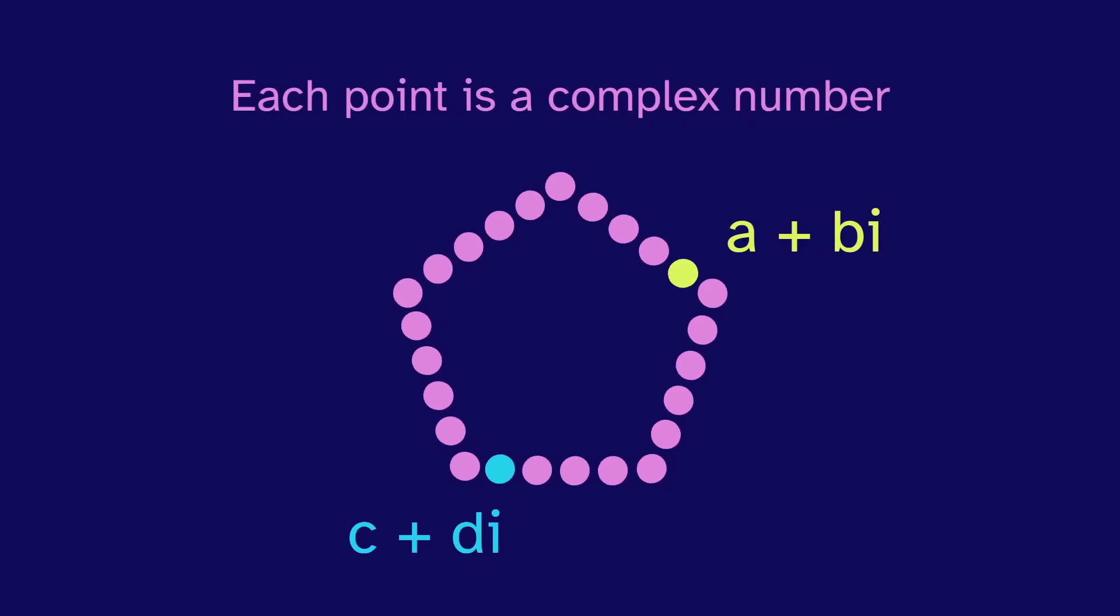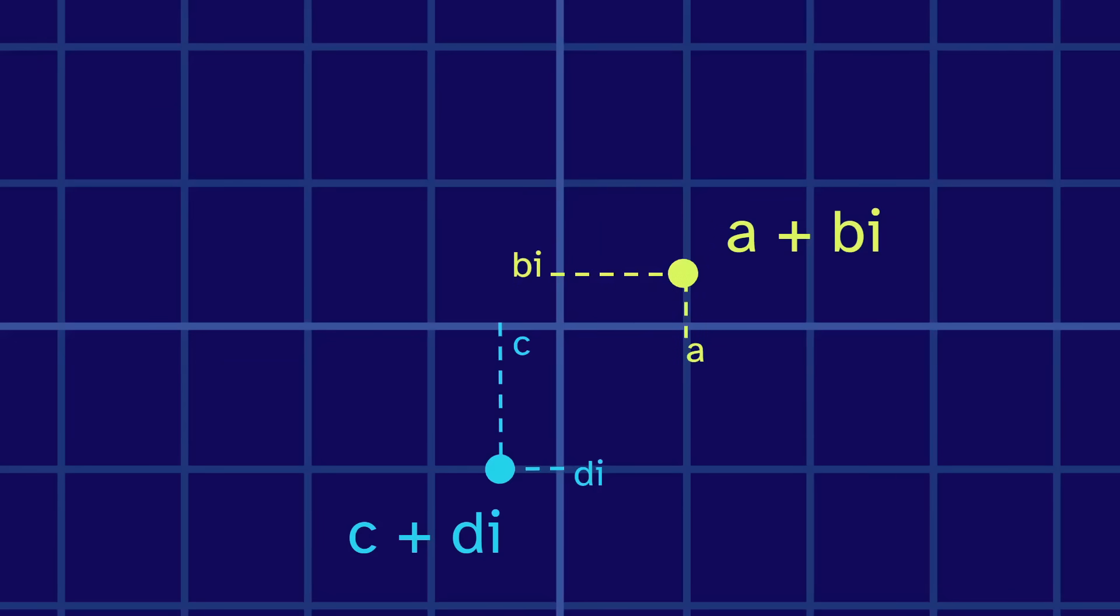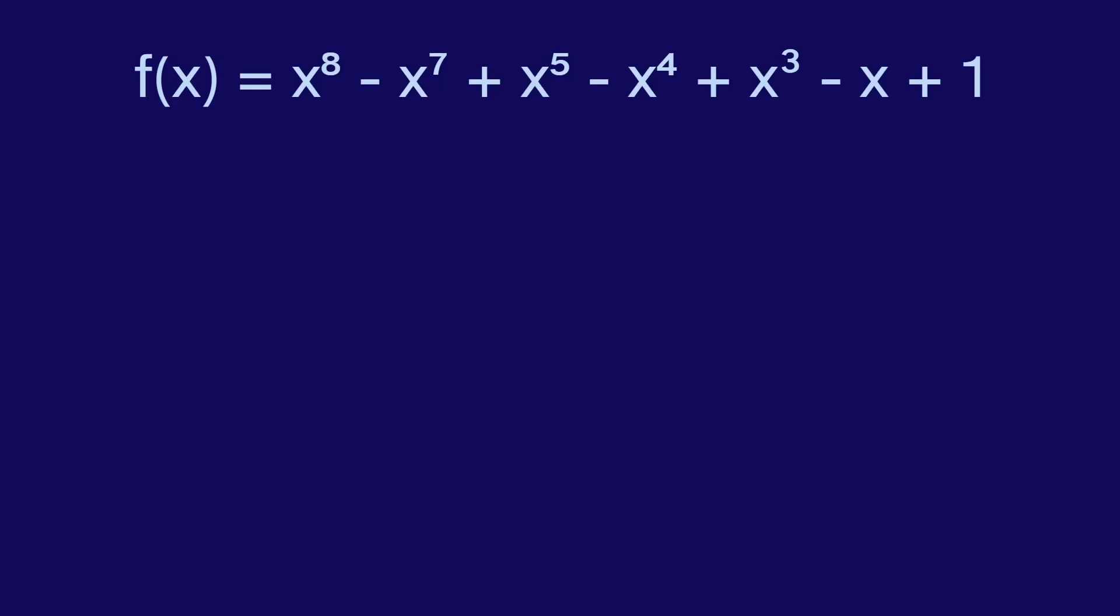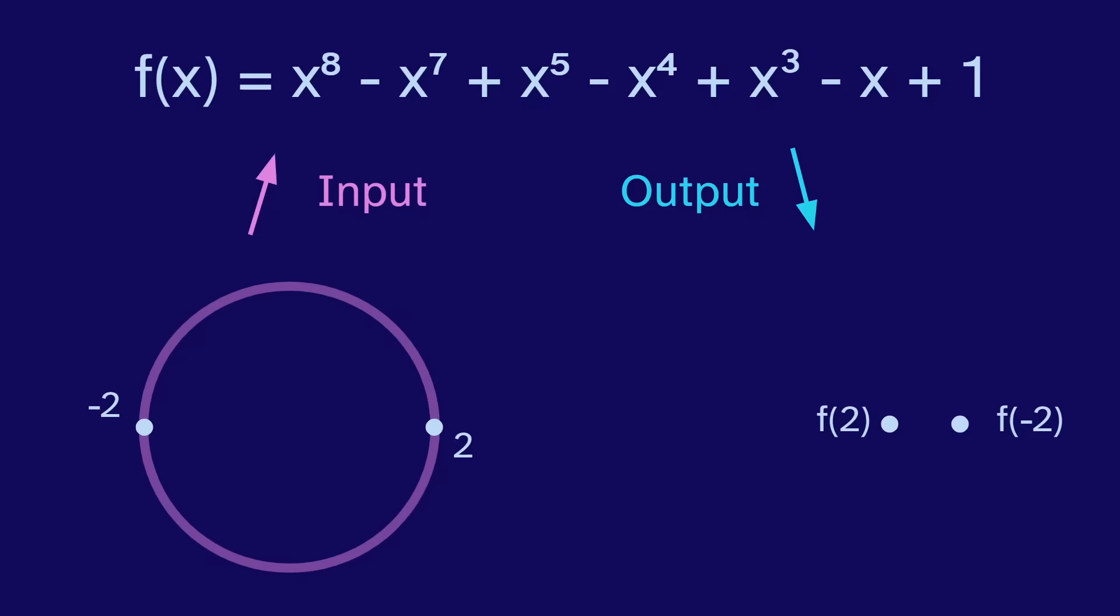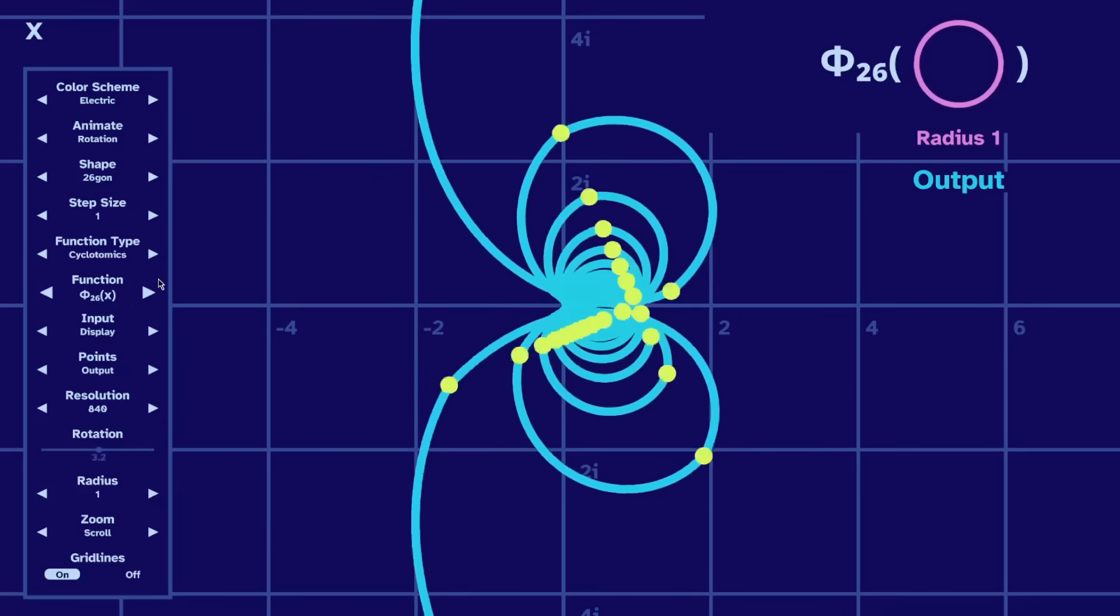The complex numbers are two-dimensional, so we can use them to make shapes. In my previous video, I explored applying a function to a shape. We take each point of the shape as an input to the function and graph the output. The results are pretty cool.